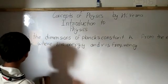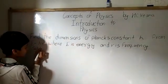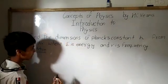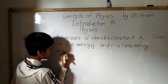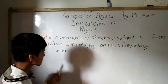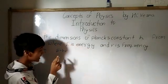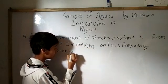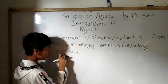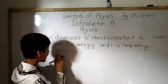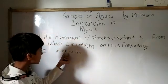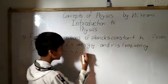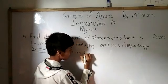Let us start our solution. We have the equation E equals H nu. We need the dimensions of H, so we rearrange the equation for Planck's constant. Since nu was in multiplication with H, when we bring E to the other side, nu comes in division. So H equals E divided by nu.